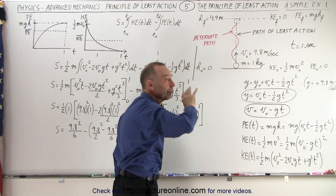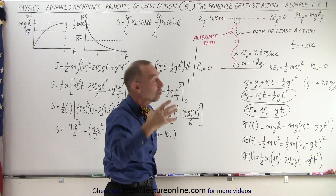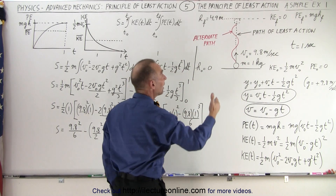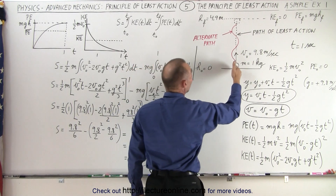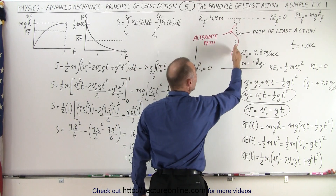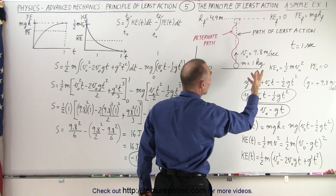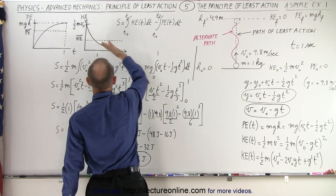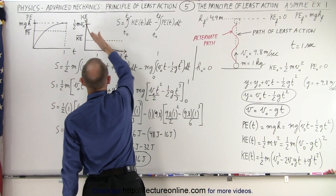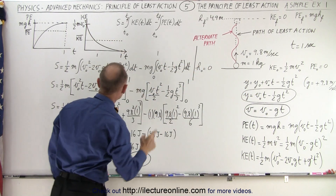The kinetic energy is a function of velocity squared. As the velocity decreases, velocity squared will decrease much faster, and you'll get a decreasing kinetic energy like this.